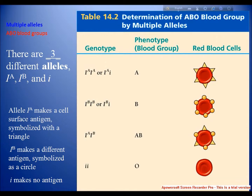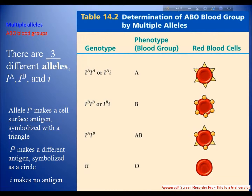There are three different types of alleles present in the ABO blood group: IA, IB, and i (written as ii for the homozygous form). Genotype IAIA or IAi gives phenotype A — the IA allele makes a cell surface antigen symbolized with a triangle. Genotype IBIB or IBi gives phenotype B, symbolized as a circle. The allele i makes no antigen. The genotype ii means blood type O — the phenotype shows only the plain blood cell.